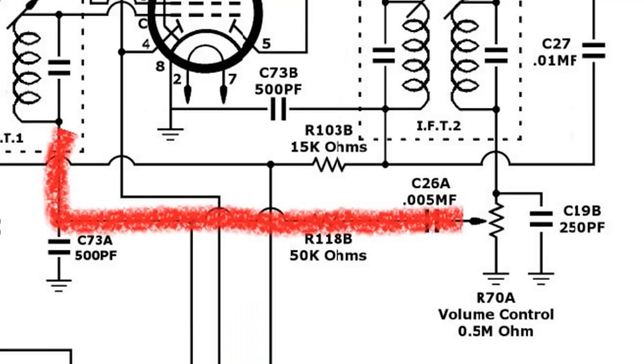As you can see, it's part of the volume pot circuit, the output. If we just follow that red line coming from the pot, it goes through a 0.05, there's a 50k, and it goes into the first IF can, which then goes to the grid cap of the 6B8.